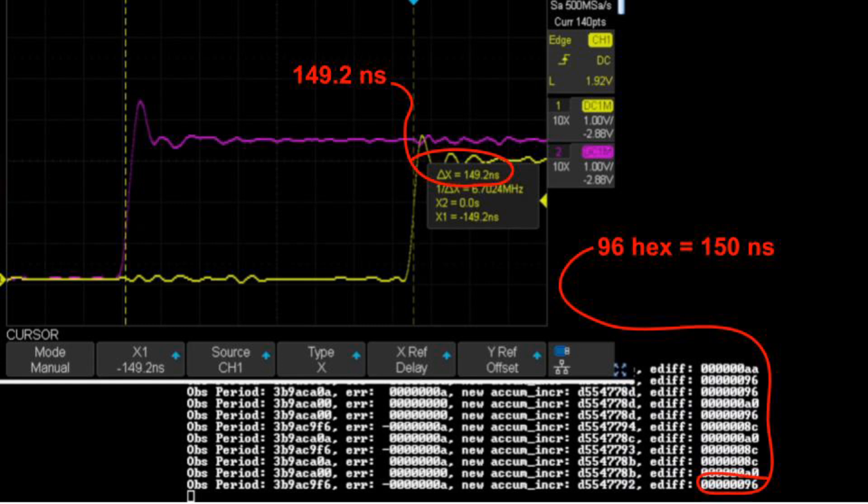Here, the scope cursors show a time difference of 149.2 nanoseconds. The FPGA measured 150 nanoseconds, and that's great, but the measurement is not always this good. The Tang Nano 20K FPGA measurement unit is 10 nanoseconds, and there can be 10 nanoseconds of jitter. So I guess it could have errors of nearly 20 nanoseconds, but that's still a rather precise measurement.